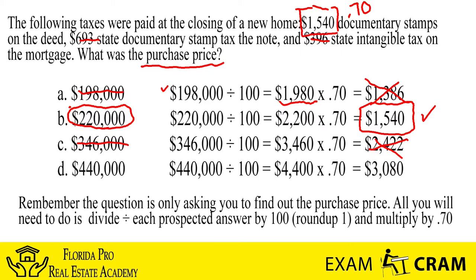I like working through all of these on the test, especially if you have enough time — it makes you feel a little bit more confident if you go through them. This next one, we're trying to find the purchase price. We take $440,000, divide it by 100, which gives us $4,400, and multiply that by 0.70, which ends up being $3,080. That's not gonna be the right one, so let's go ahead and X that out. We've been able to eliminate these three, and we know that the $220,000 is going to be the purchase price. That's all they're looking for — don't get too worried about all the other ones.